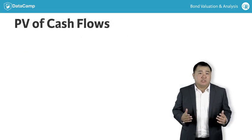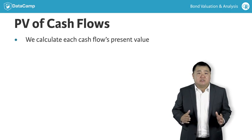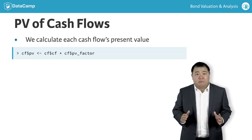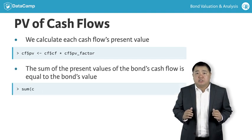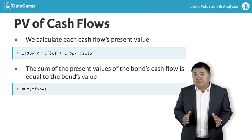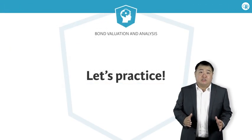The penultimate step is to calculate the present value of each of the bond's cash flows by multiplying each cash flow by the appropriate PV factor. Finally, we sum the PV of the cash flows to arrive at the bond's value. You will now apply these steps to value a bond in the following exercises.